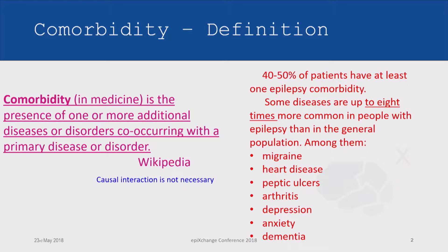40% to 50% of patients with epilepsy have at least one epilepsy comorbidity. Some diseases are up to eight times more common in people with epilepsy than in the general population. Among them: migraine, heart disease, peptic ulcers, arthritis, depression, anxiety, and dementia.